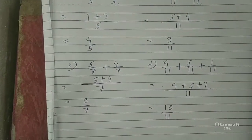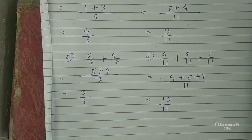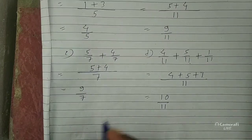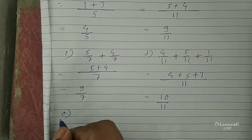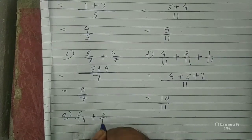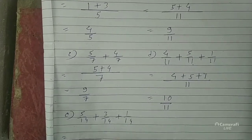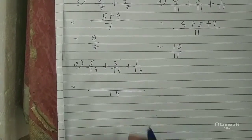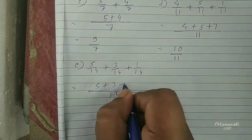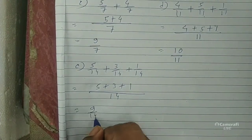So the fraction is 10 by 11. Next example: 5 by 14 plus 3 by 14 plus 1 by 14. The common denominator is 14. Numerator 5 plus 3 plus 1 is equal to 9 by 14.